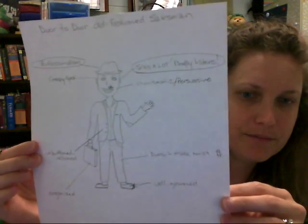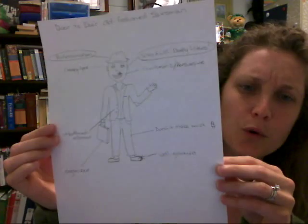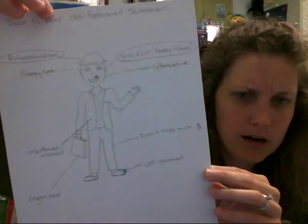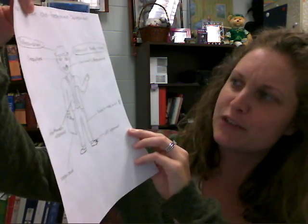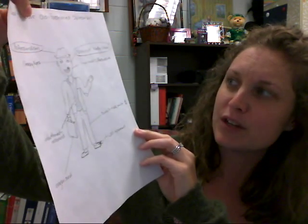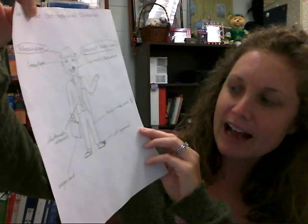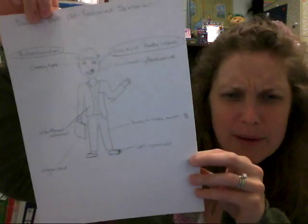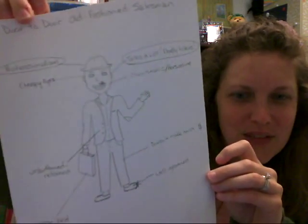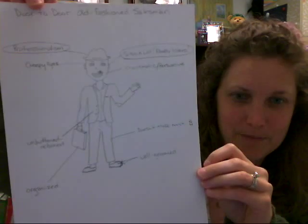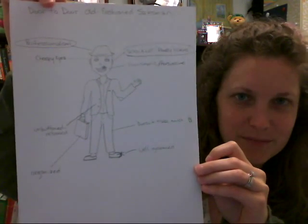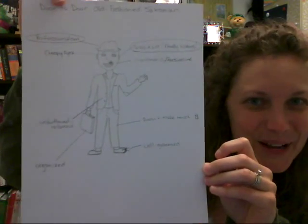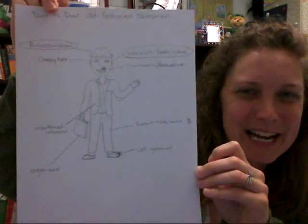Here's another one. This is the door-to-door salesman. He looks a little bit more shady. Some adjectives: creepy eyes, charismatic, relaxed, organized, well-groomed, talks a lot but barely listens. That's another salesman type, and I'm sure you guys know what you think a salesman is. Maybe these are relatable to you.